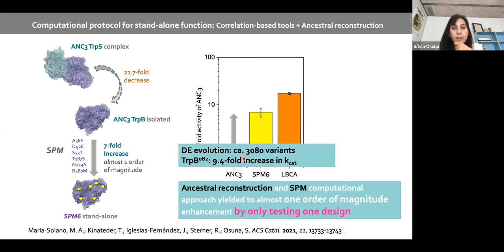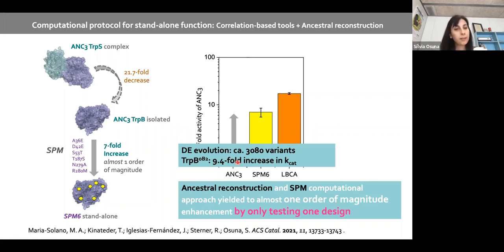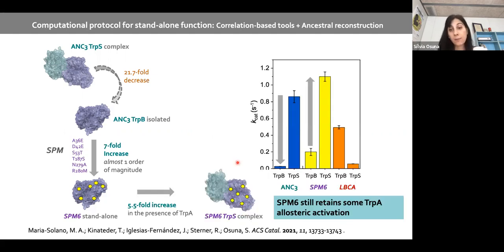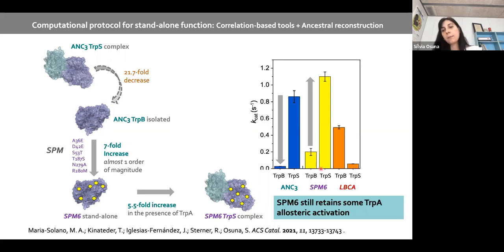To put this in perspective, the Arnold lab's directed evolution generated and screened more than 3,000 variants to achieve a ninefold kcat increase. We achieved sevenfold with a single design. One unexpected result: we thought introducing these mutations might reduce allosteric regulation by alpha, but SPM6 in complex with alpha is actually even better than the starting ANC3 in complex.